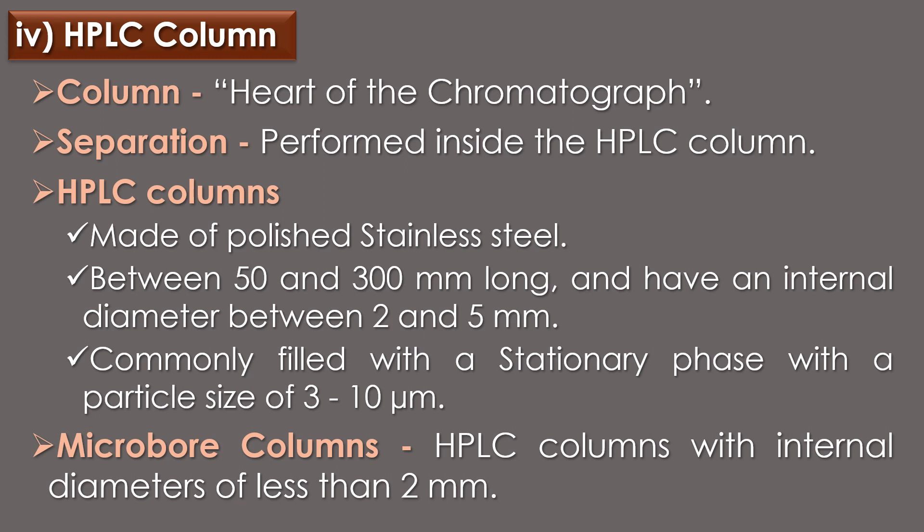The HPLC column is considered the heart of the chromatograph. The separation is performed inside the HPLC column. HPLC columns are usually made of polished stainless steel because stainless steel is tolerant towards a large variety of solvents. HPLC columns are between 50 and 300 mm long and have an internal diameter between 2 and 5 mm. HPLC columns are commonly filled with a stationary phase with a particle size of 3 to 10 micrometers. Columns with internal diameters of less than 2 mm are often called microbore columns.